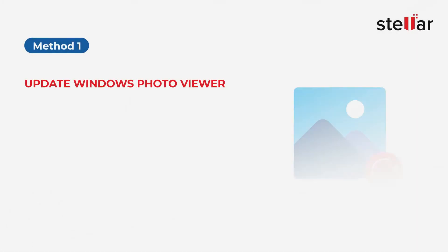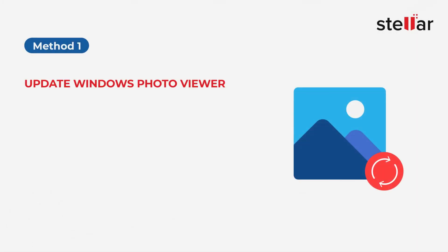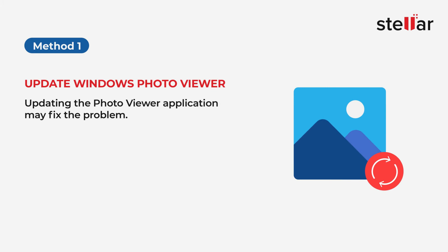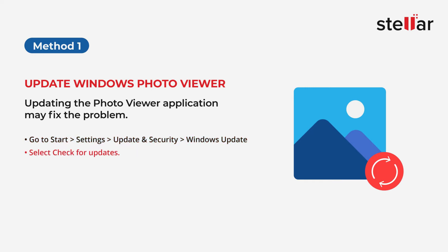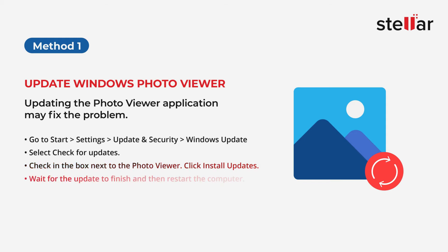Method 1: Update Windows Photo Viewer. Updating the Photo Viewer application may fix the problem. Go to Start > Settings > Update and Security > Windows Update. Select 'Check for Updates,' then check the box next to Photo Viewer and click 'Install Updates.' Wait for the update to finish and then restart the computer.